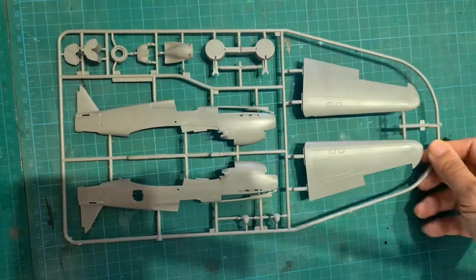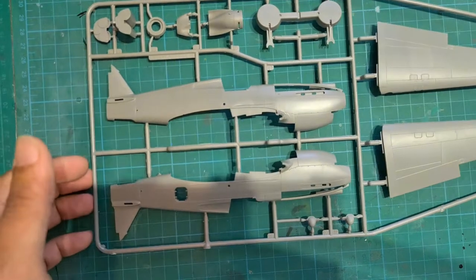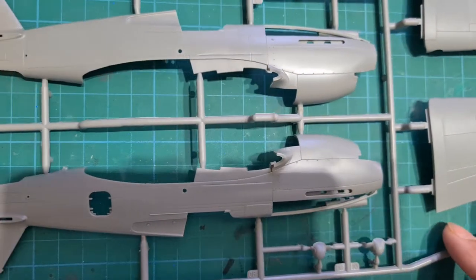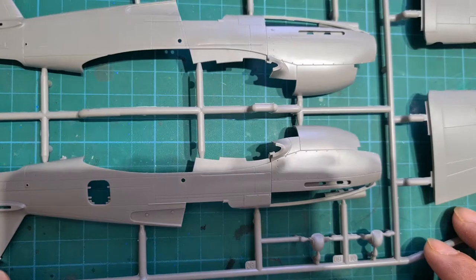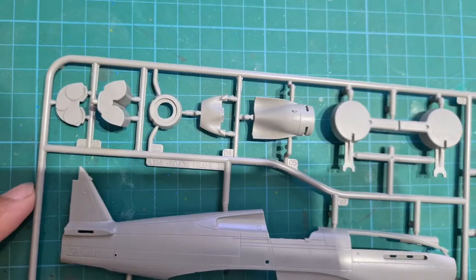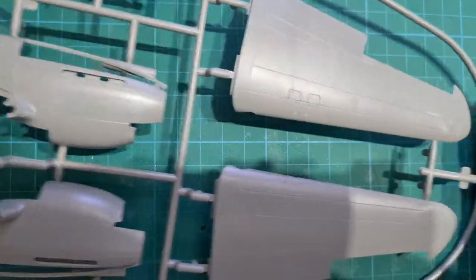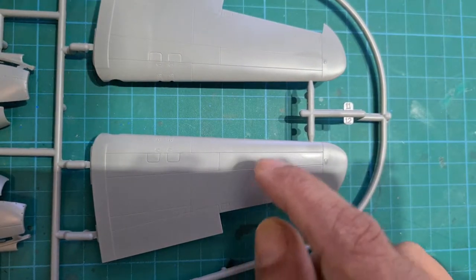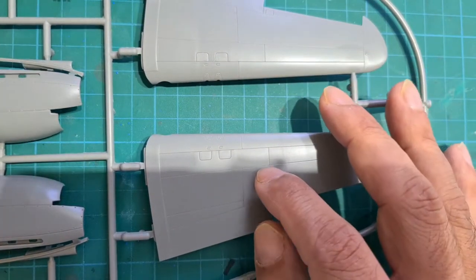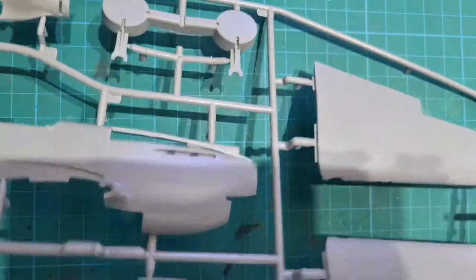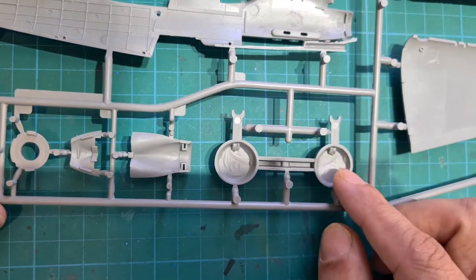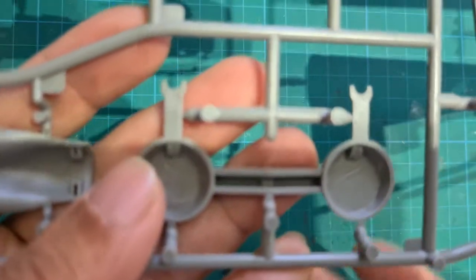Let's look at the fuselage and the wings first. As you can see very nicely detailed. Nice rivets. Nice panel lines. Nicely detailed.